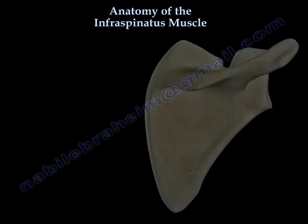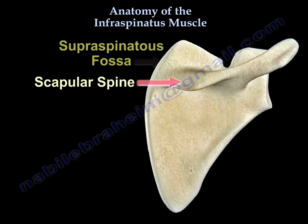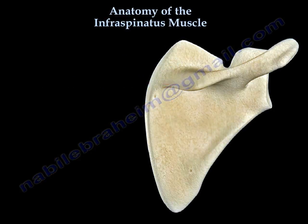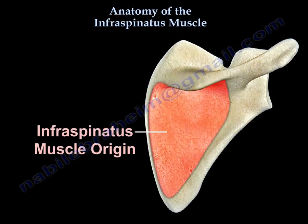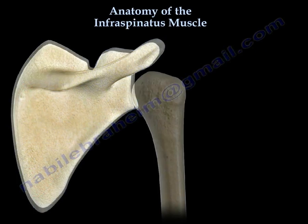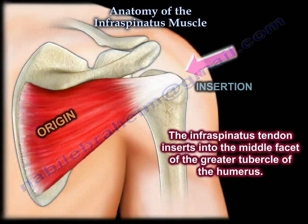Here is the scapula from the back. Here is the spine of the scapula. The supraspinatus fossa is above the spine and the infraspinatus fossa is below the spine. The infraspinatus arises from the infraspinatus fossa of the scapula and inserts into the middle facet on the greater tuberosity of the humerus.